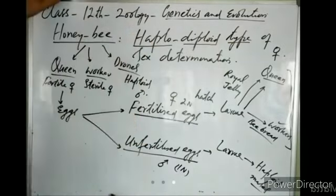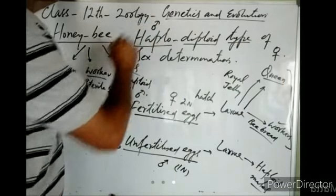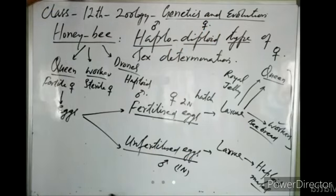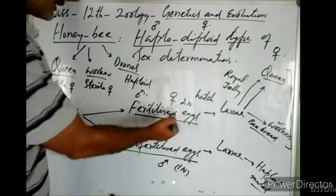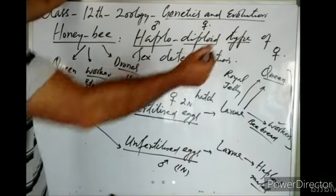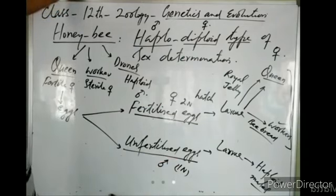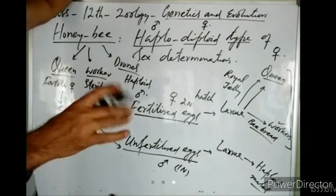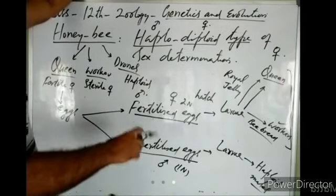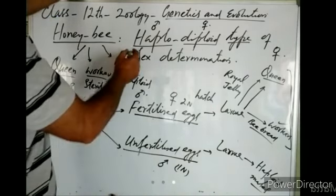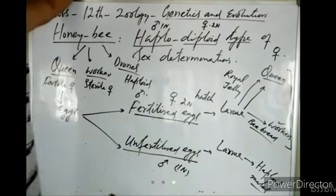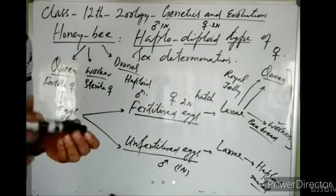This type of sex determination is known as haplodiploid sex determination, because haploid eggs always develop into males and diploid eggs always develop into females. So sex in honeybees is determined by the number of chromosome sets. That is all about sex determination in humans, birds, and honeybees.